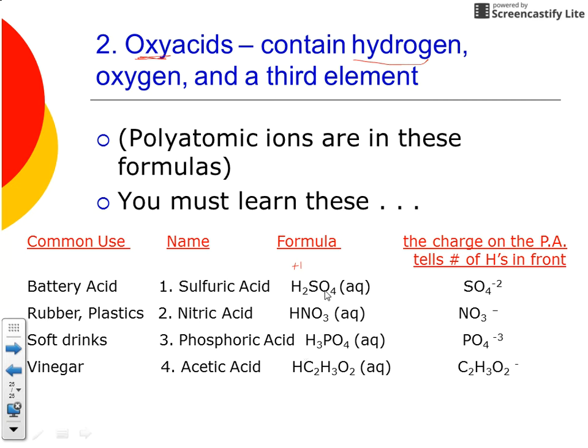They end in a polyatomic ion: sulfate, nitrate, phosphate, and acetate. These names end just like the other acids. The difference though is they do not start with hydro, so your oxyacids do not use hydro. Just think of it as the -ate changes to -ic: sulfate to sulfuric acid, nitrate to nitric acid, phosphate to phosphoric acid, and acetate to acetic acid.